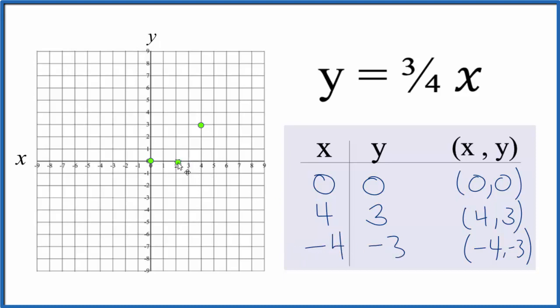So negative 4 and negative 3. Negative 4 x, negative 3 y, and you can see they all line up. Let's put a line through them. Put arrows to show that this goes to infinity. So that's the graph for y equals 3/4ths x.